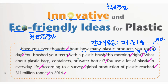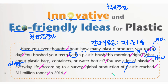두 번째 줄 'with a plastic brush'에서 플라스틱 칫솔을 가지고 할 때 전치사 with를 씁니다. 'What about?'은 뭐뭐는 어때?라는 뜻으로 동의어는 'how about'이죠. 그 다음 'you use a lot of plastic'에서 'a lot of'는 많은이라는 말이며 'lots of'라고도 합니다. 여기서 플라스틱에 S가 없다는 것은 셀 수 없는 명사라는 뜻이니까 'much'로만 변경 가능합니다.